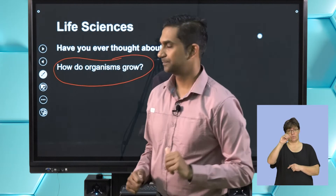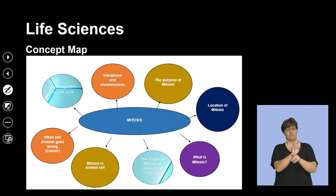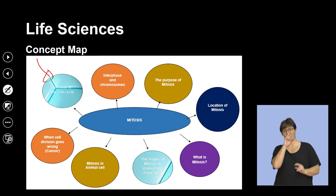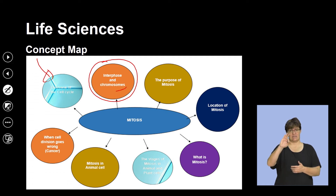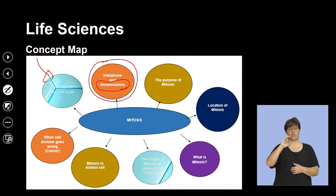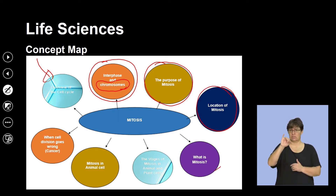That is all happening through a process known as mitosis, or cell division. It's important that we look at the overview of today's lesson. We're going to look at what it means to refer to a cell cycle, what interphase is and its relationship to chromosomes, the purpose of mitosis, where mitosis occurs, and the process of mitosis itself.